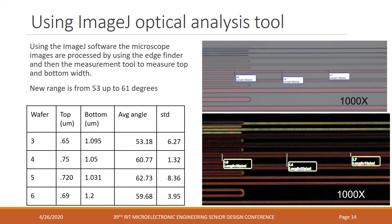One issue with tcapture was manually clicking on feature edges, leading to large variation due to screen resolution and magnification. To address this, measurements were recollected using ImageJ, an image processing package that can find and highlight feature edges automatically. Using ImageJ boosted the overall sidewall angles to a new range of 53 to 61 degrees, though still far from ideal. It's important to note that the artificial pixel-based undercut is still in effect, so these values may be falsely low.